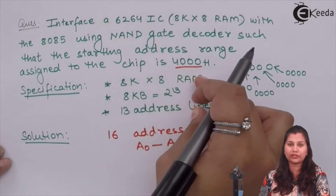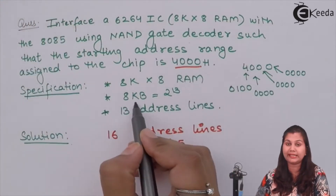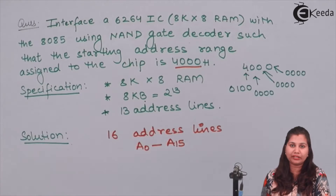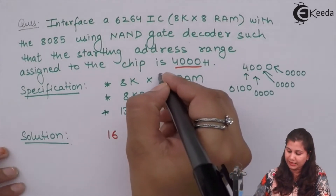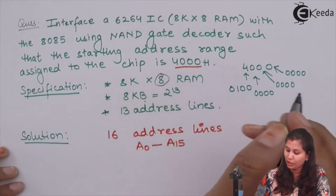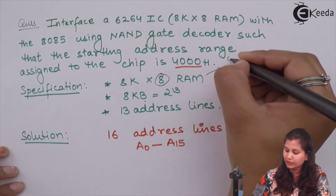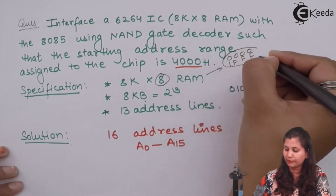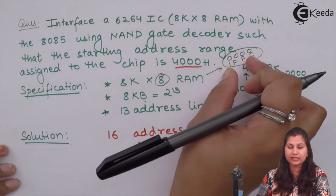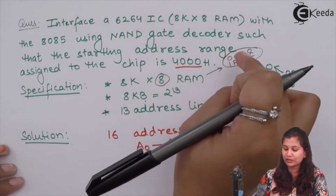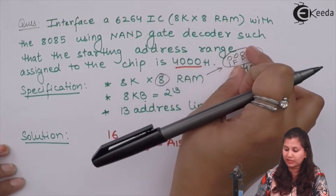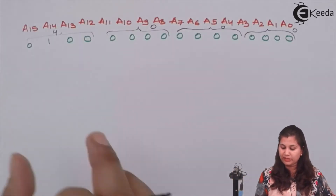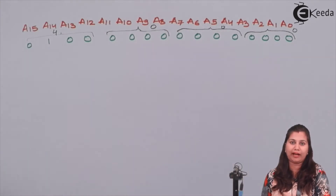The IC has a maximum memory size of 8 kilobytes. If we start addressing from 0000H, 8KB of memory requires addresses from 0000H to 1FFFH. Now since the starting address has to be 4000H and not 0000H, we add 4000H, giving us an end address of 5FFFH. So the memory chip will occupy addresses from 4000H up to 5FFFH.